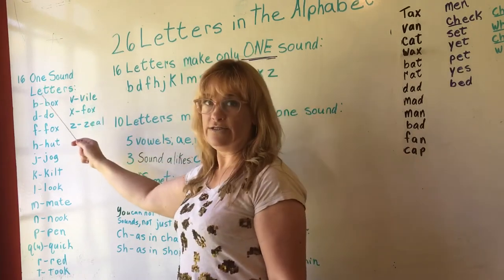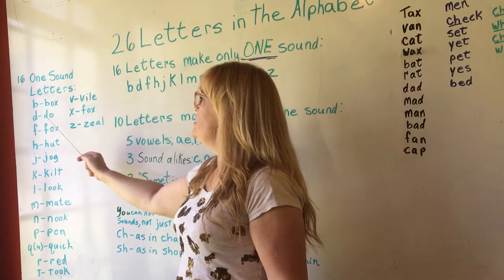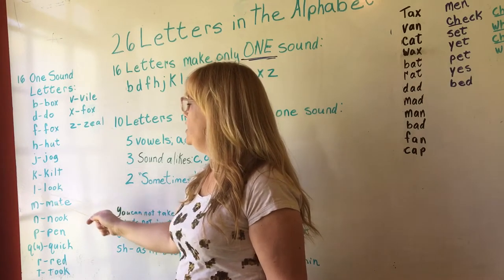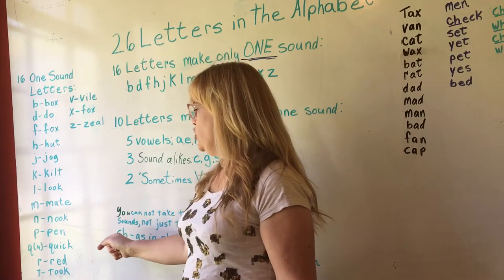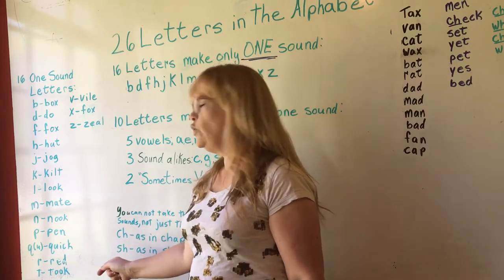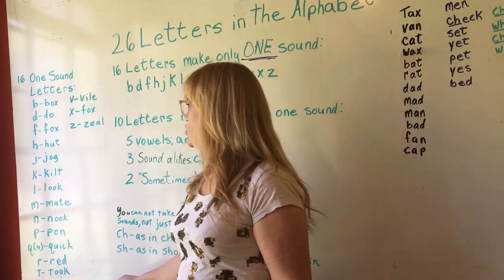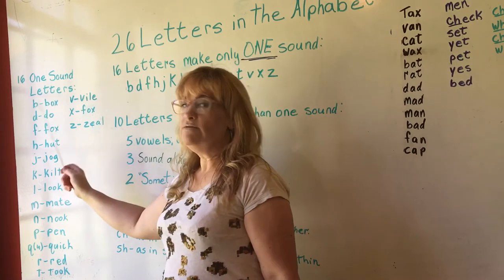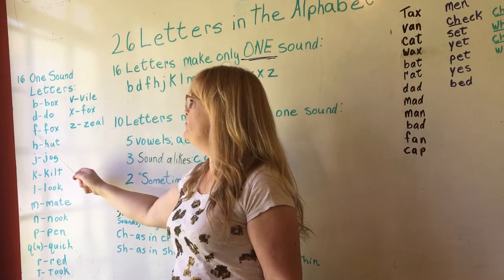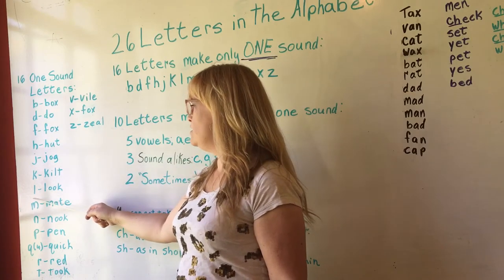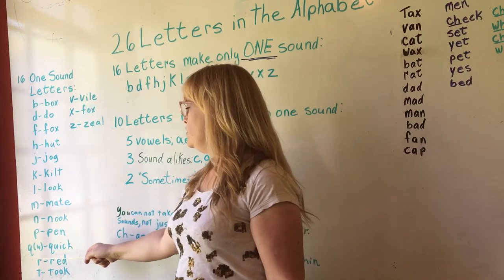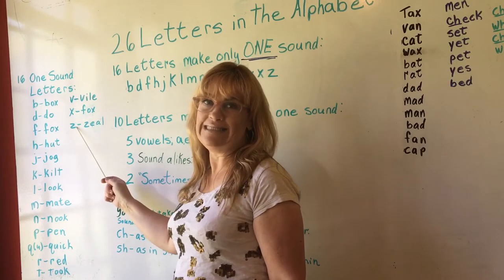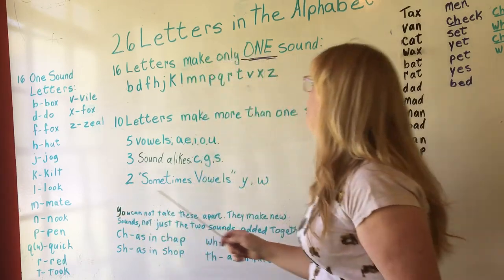The 16 one-sound letters are: B — box, D — do, F — fox, H — hut, J — jog, K — kilt, L — look, M — mate, N — nook, P — pen, QU — quick, R — red, T — took, V — vial, X — fox, and Z — zeal.